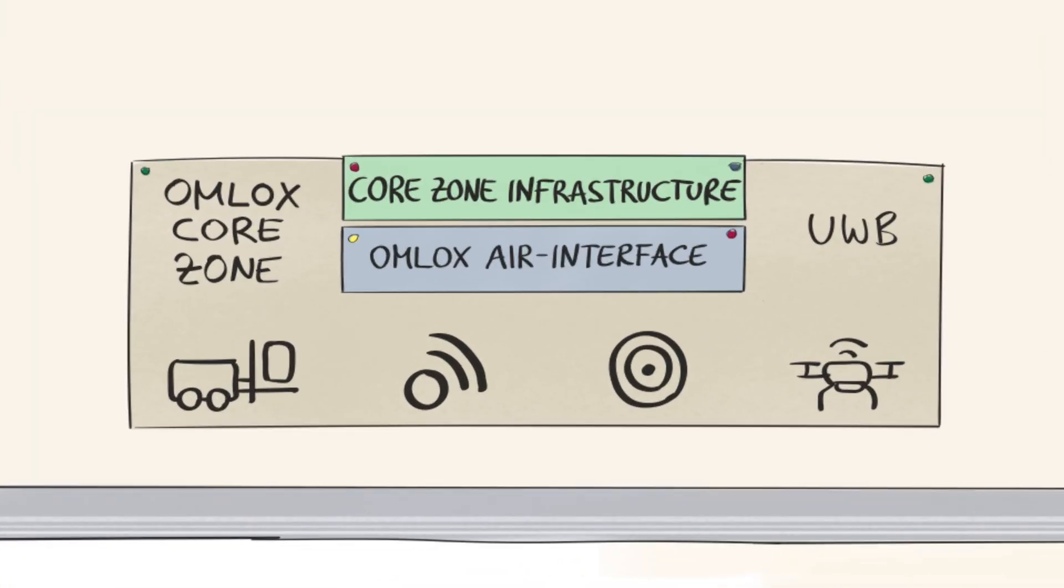Let's have a quick look at OMLOX. The OMLOX core zone provides open interfaces in the UWB area and guarantees easy interoperability, just like Niko's Wi-Fi at home.